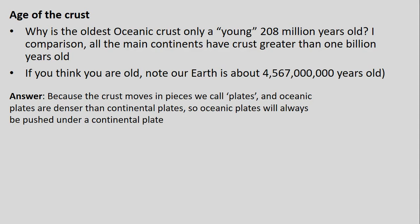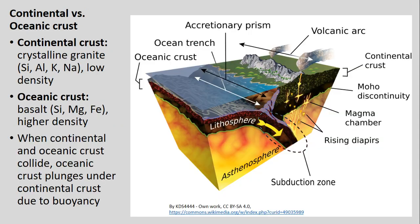The answer lies in the fact that the crust actually moves about in pieces we term plates. Oceanic plates are denser than continental plates, so when they run into each other, oceanic plates always get pushed under and oftentimes melted underneath a continental plate. This is due to the composition of rocks making up continental crust versus oceanic crust — continental crust is made of lower-density rock types than oceanic crust.